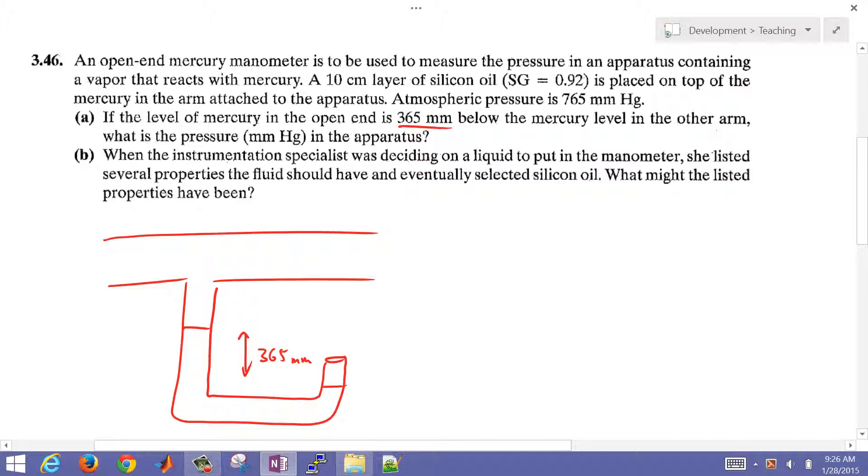Because this gas, this vapor here, reacts with the mercury, we put a 10 centimeter layer of silicon oil. Not to scale here, but close. So this is our silicon oil, and that has a specific gravity of 0.92.